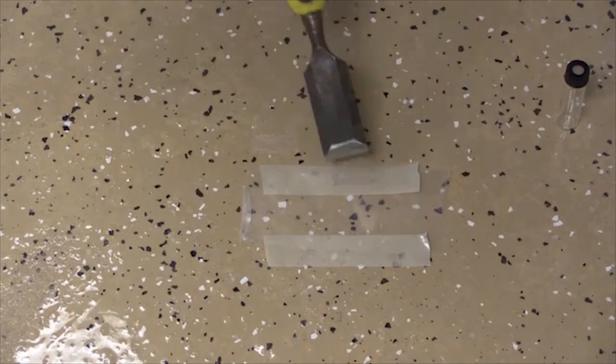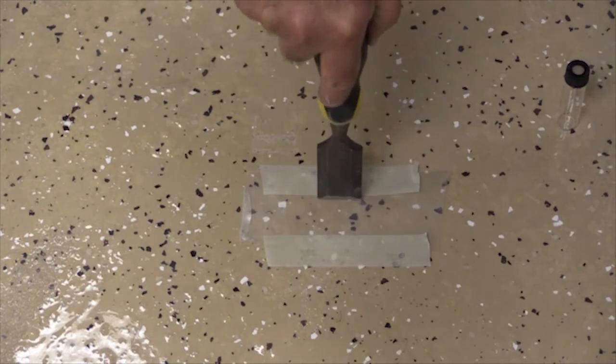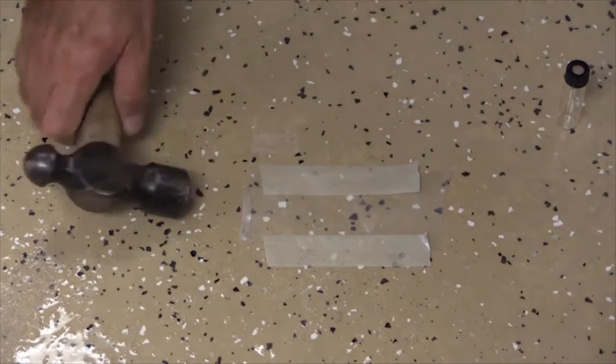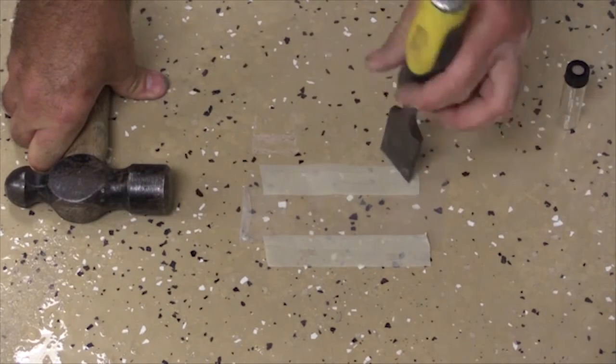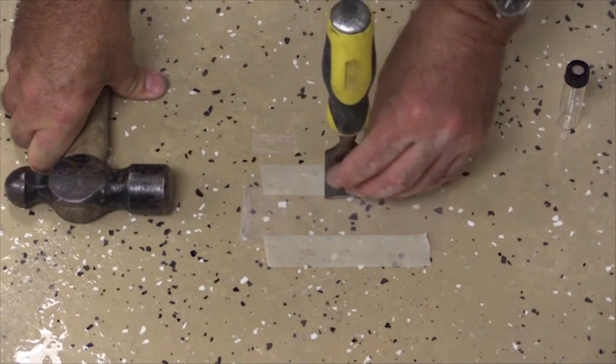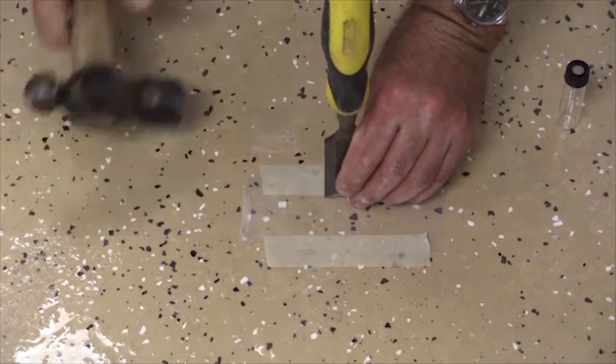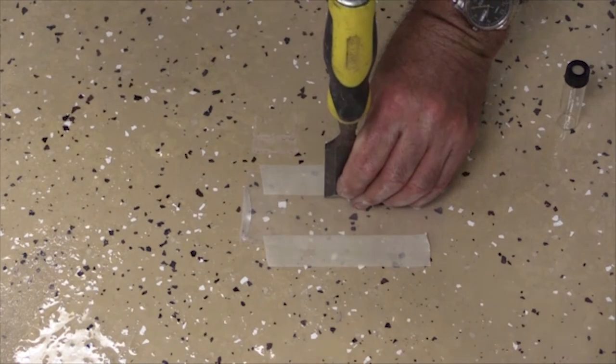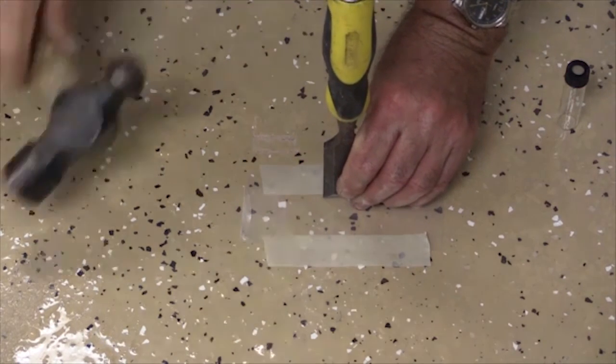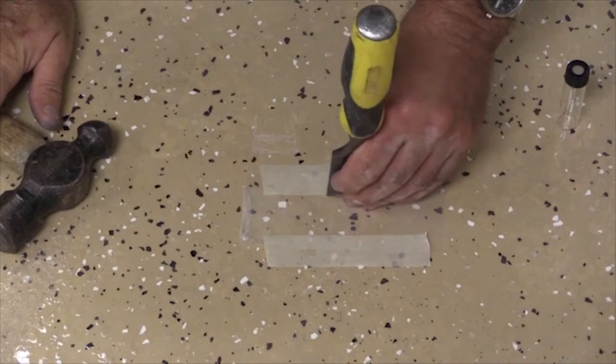So now what we can do is we can take our sample in the area that we want to right through our plastic. So what I'm going to do is take the chisel and hold it at a slight angle so I can cut through the coating, and make sure that I've cut through the system.